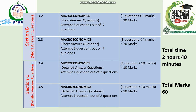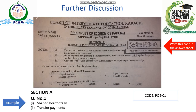So the total time for this paper is three hours. I have taken a picture of the Principles of Economics paper from the annual examination of 2019, which happened on 30th April 2019. You can see the name of the paper, commerce regular and private, and the date is mentioned.